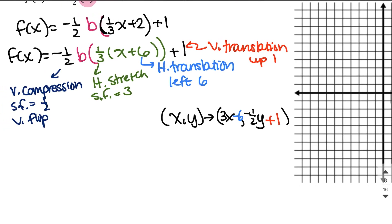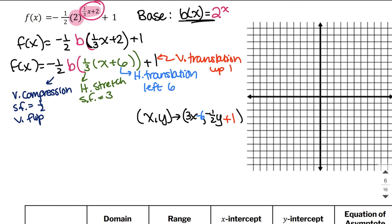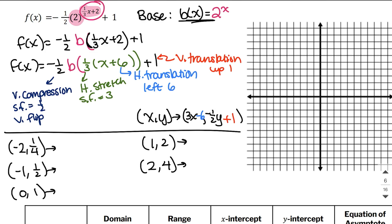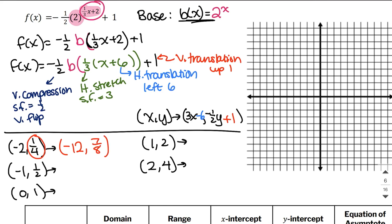Now let's apply this to our original coordinates for the base function B of X equals 2 to the power of X. For X equals negative 2: 2 to the negative 2 is one-quarter. For negative 1: one-half. For 0: 1. For 1: 2. For 2: 4. Now applying the mapping rule — for negative 2: 3 times negative 2 is negative 6, minus 6 gives negative 12. Then negative one-half times one-quarter is negative one-eighth; add 1 to get 7 over 8. For the point (2, 4): 3 times 2 is 6, minus 6 gives 0. Negative one-half times 4 is negative 2; negative 2 plus 1 is negative 1.